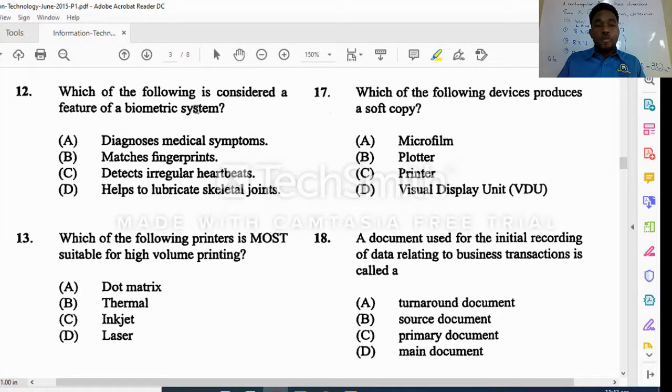Which of the following is considered a feature of a biometric system. Remember we said that biometric systems are input devices which allow data from your body part. Diagnosis medical center would not be that one. Matches fingerprints, so your fingerprint is a feature of your biometric system.